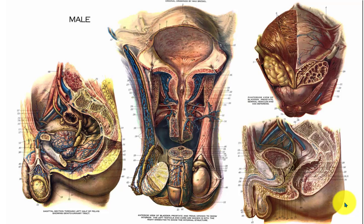This chart shows the anatomy associated with an individual that has testes. This chart shows a couple of different images and I'll go over each one of them one by one and point out the structures that I see.